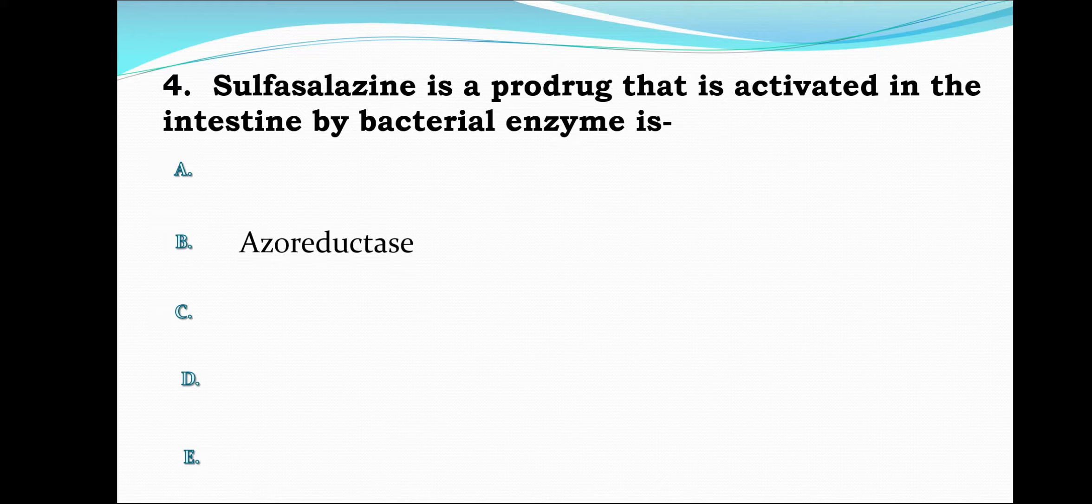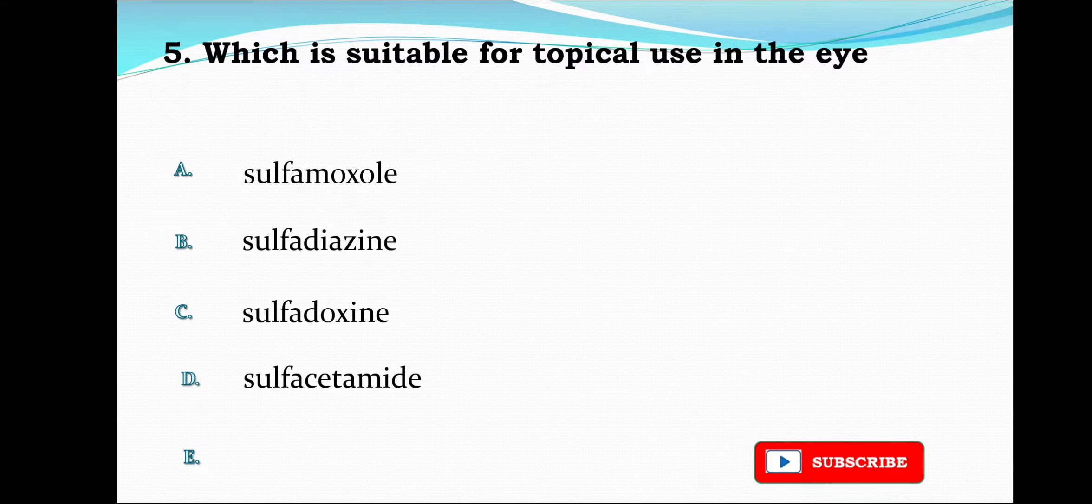5-aminosalicylic acid is used as anti-gout and sulfapyridine is used in dysentery. Next question,